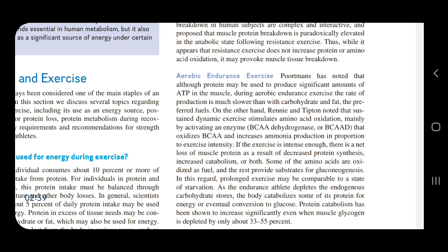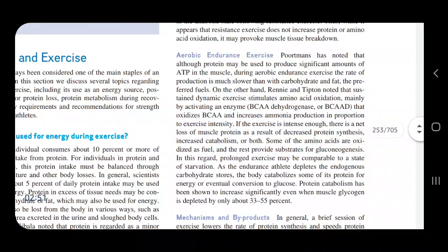Sustained dynamic exercise stimulates amino acid oxidation, mainly by activating an enzyme called BCAAD hydrogenase. BCAAD stands for branched-chain amino acid dehydrogenase, which oxidizes branched-chain amino acids (BCAAs) and increases ammonia production in proportion to exercise intensity. If the exercise is intense enough, there is a net loss of muscle protein as a result of decreased protein synthesis, increased catabolism, or both.